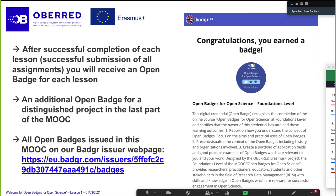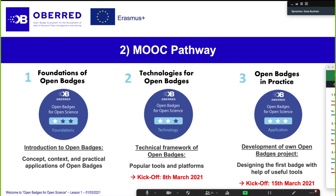This means that once you complete the activities in each lesson, the badges are issued to you automatically from the MOOC platform. You get a nice email saying congratulations, you earned a badge — and then you can display this badge wherever you like, on your blog or on social media like LinkedIn. In the entire MOOC we have three lessons, and each lesson is like a level dedicated to a specific topic. Each lesson ends with the issuing of a badge.